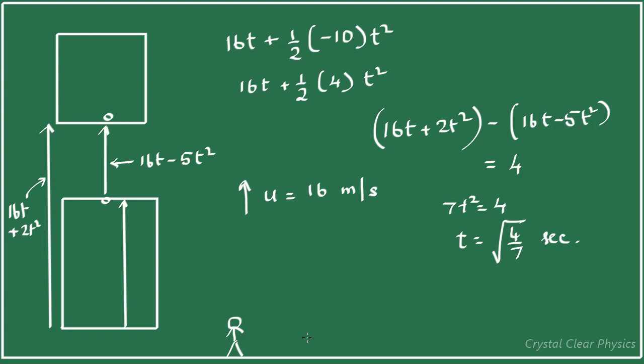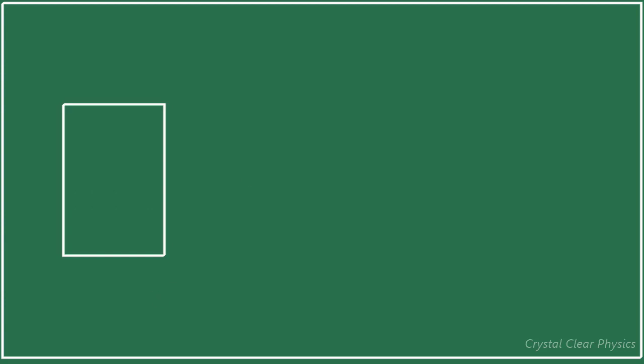Let's now solve the problem in the elevator frame of reference — that is, the accelerated frame of reference. In the elevator frame, the elevator is stationary; it's not moving. From the point of view of someone standing inside the elevator, the elevator is not moving, and the bulb is also not moving. So when the bulb leaves the ceiling, its initial velocity is zero.